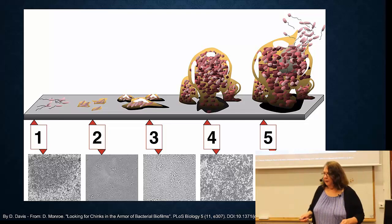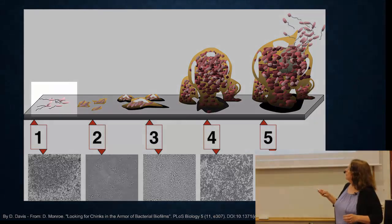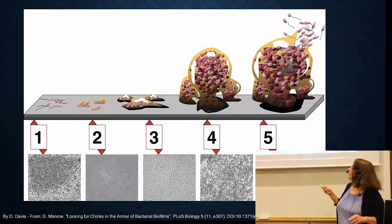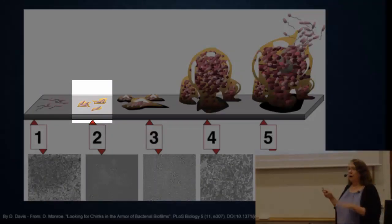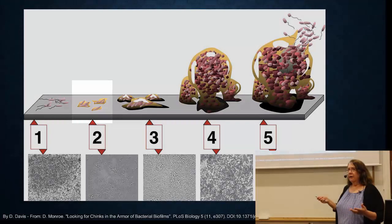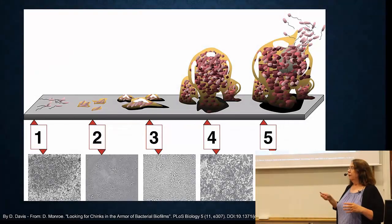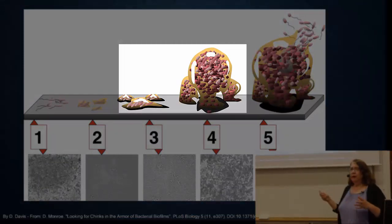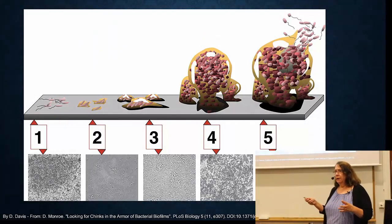How that happens is shown here. The bacteria, which are normally swimming around, might bump into a nice surface. They attach specifically to the surface and start to make polysaccharides and form little colonies on the surface. Over time, they get bigger and bigger, creating quite big, complex communities.